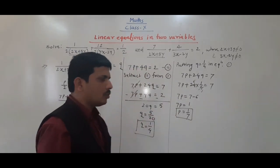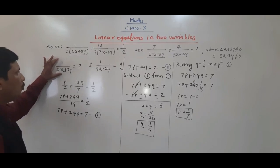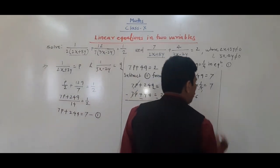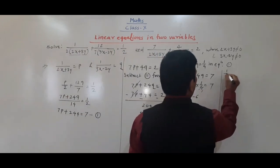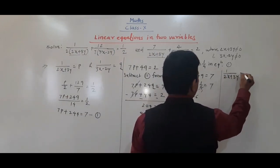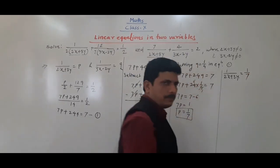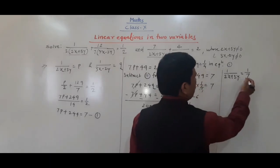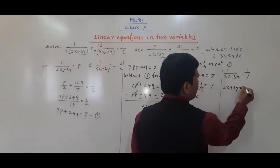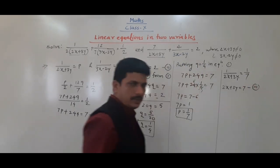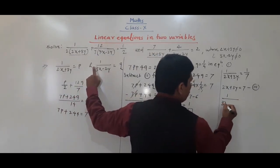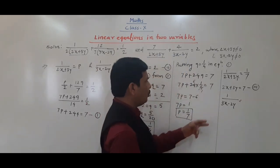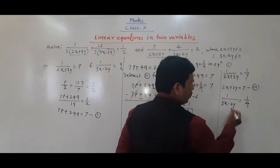So we have q = 1 by 4 and p = 1 by 7. Since 1 upon (2x + 3y) = p = 1 by 7, by cross multiplication we get 2x + 3y = 7. This is the third equation. And since 1 upon (3x - 2y) = q = 1 by 4, by cross multiplication we get 3x - 2y = 4. This is the fourth equation.